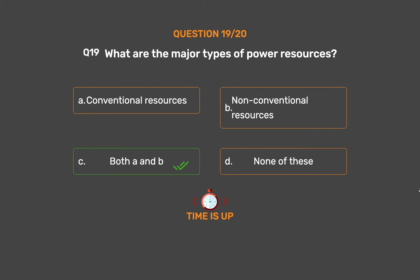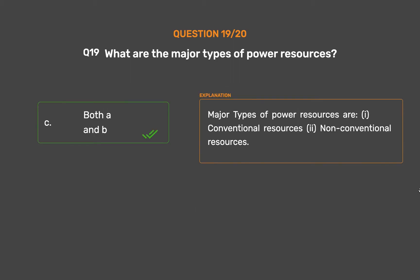The correct answer is Option C: Both A and B. The major types of power resources are: 1. Conventional resources, and 2. Non-conventional resources.